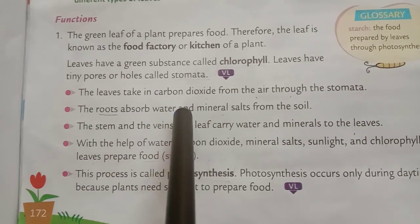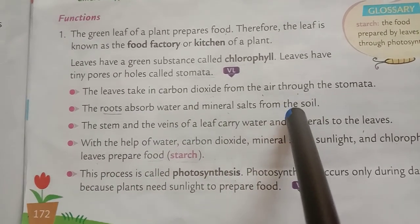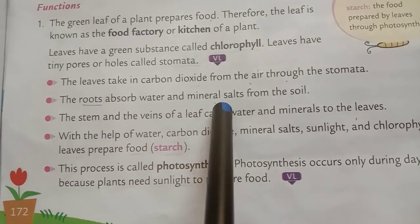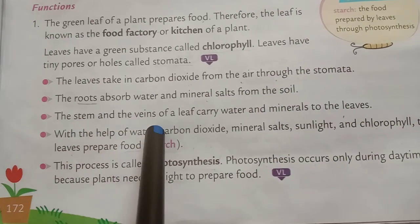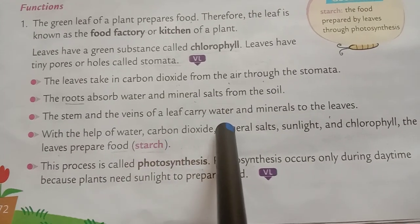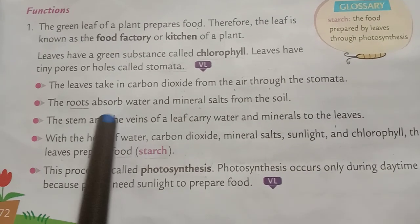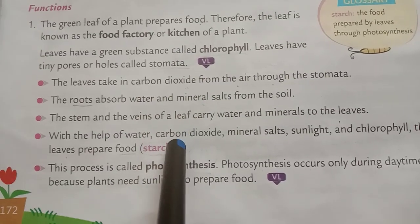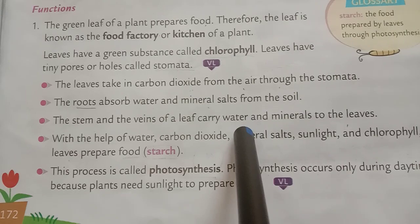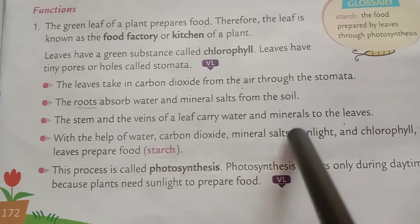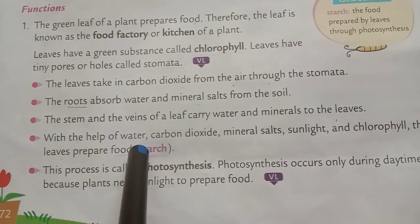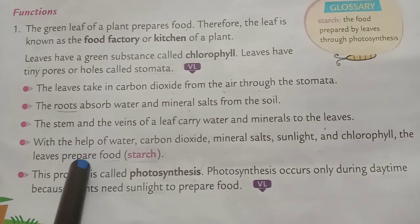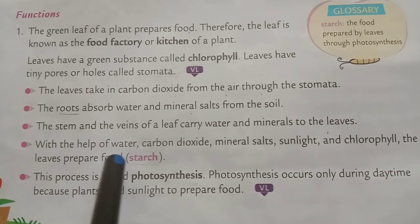The roots absorb water and mineral salts from the soil. The stem and the veins of a leaf carry water and minerals to the leaves. With the help of water, carbon dioxide, mineral salts, sunlight and chlorophyll, the leaves prepare food that is also called starch.